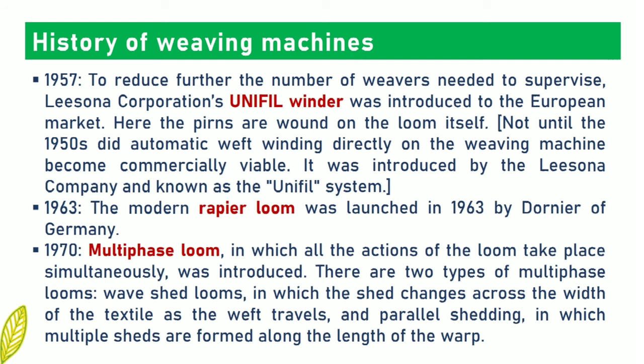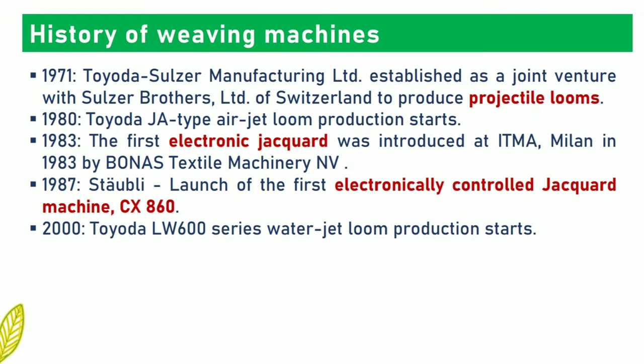In 1957, to reduce further the number of weavers needed to supervise, Lissona Corporation's unifill winder was introduced to the European market. In 1963, the modern rapier loom was launched by Dornier of Germany. In 1980, Toyota JA type air jet loom production started. In 1983, the first electronic Jacquard was introduced at ITMA Milan by Bonas Textile Machinery. In 1987, Stäubli launched the first electronically controlled Jacquard machine CX 860. In 2000, Toyota LW600 series of water jet loom production started.